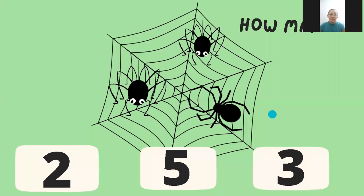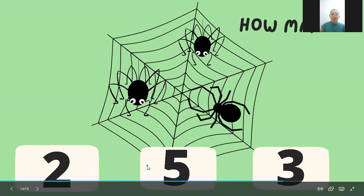Let's make a practice. I'm going to show you some bugs here. These are spiders and we are going to count. How many spiders are in here? We have one, two, three spiders. So which one of these numbers is the number three? Is this the number three? No, it is not. This is the number three. Three spiders.